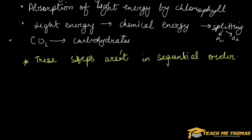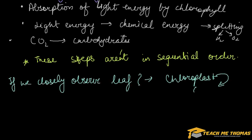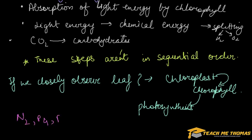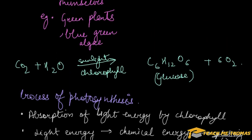Now we shall see what are the parts involved in this process. If we closely observe the leaves, then chloroplasts contain the chlorophyll that is responsible for photosynthesis. And the rest of the nutrients like nitrogen, phosphorus, iron, magnesium - they all are consumed from the soil with the help of their roots. That is all about autotrophic mode of nutrition.